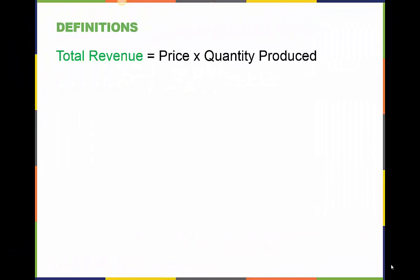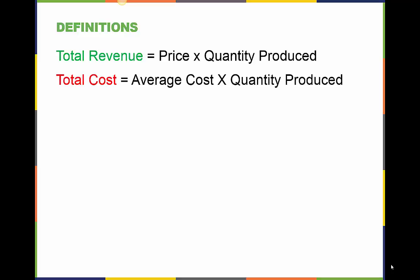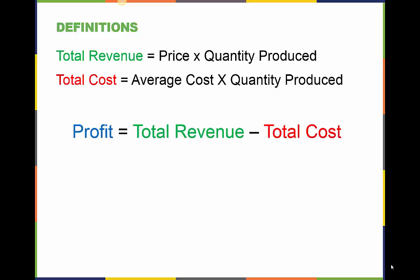First, let's look at some basic definitions. Total revenue is equal to the price of the firm's product multiplied by the quantity of product the firm produces. Opposite of revenue is cost. Total cost is the average cost multiplied by the quantity of the product that the firm produces. When we subtract the total cost from the total revenue, the result is profit.